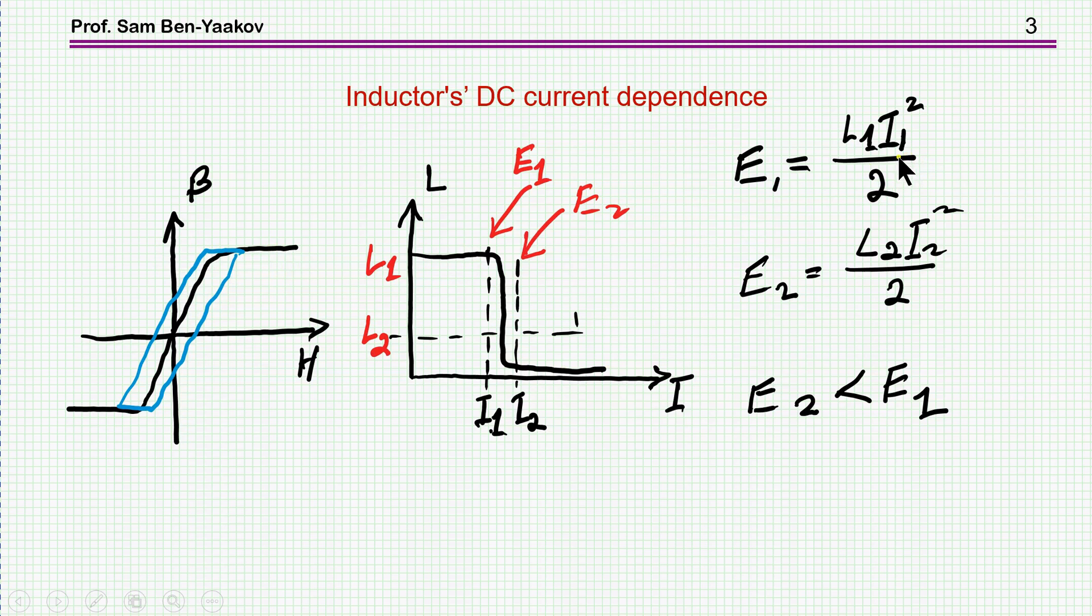Now, the energy is related to Li² over 2, so we have two energies, one here and one here. If the drop is very fast, then it turns out that calculating the energy according to this equation, we find that the energy in this point, or this region for this current, is lower than the energy for this current. Because the drop in the inductance is very large.